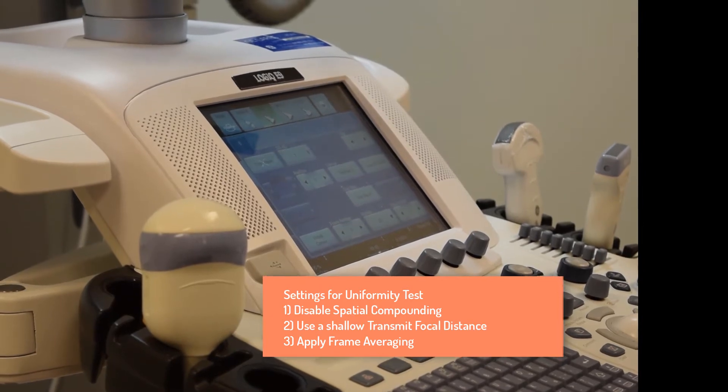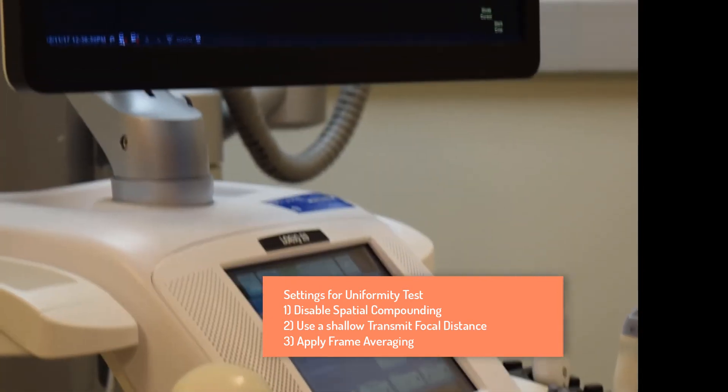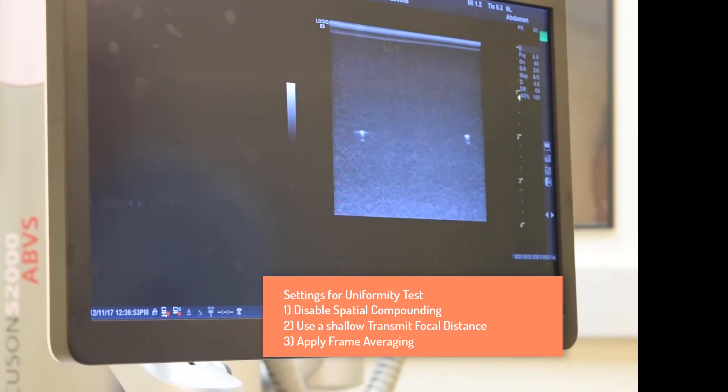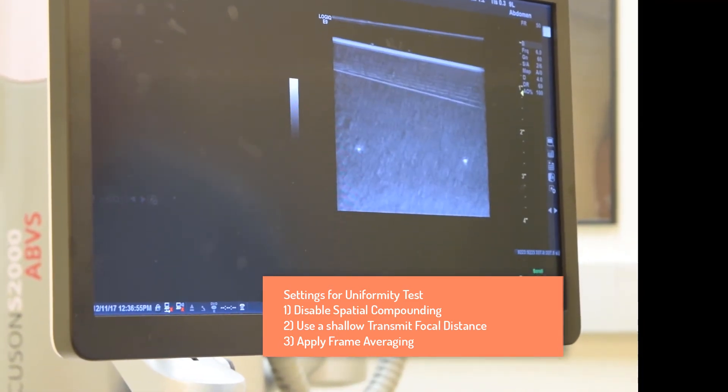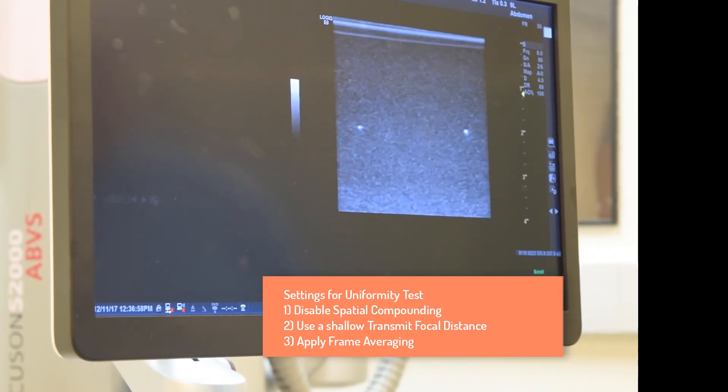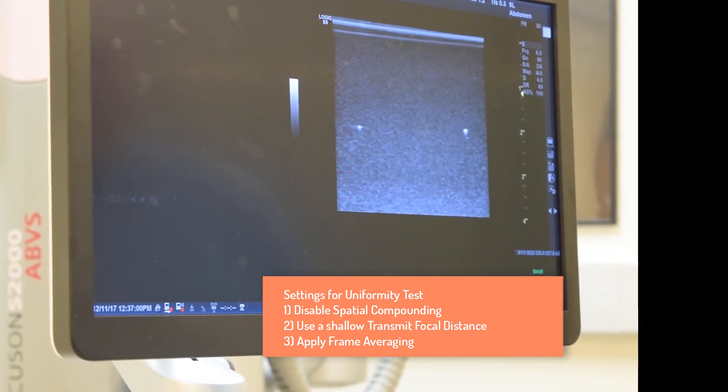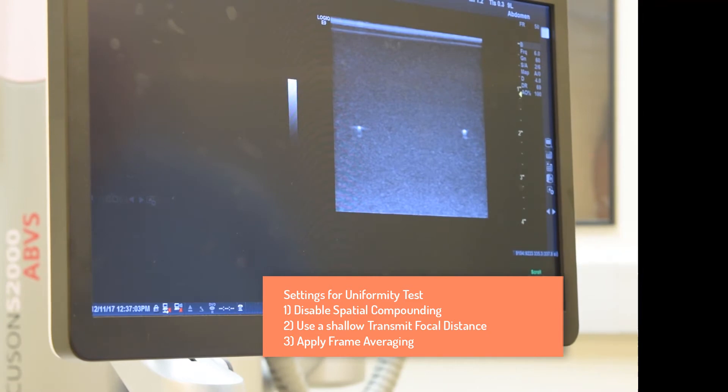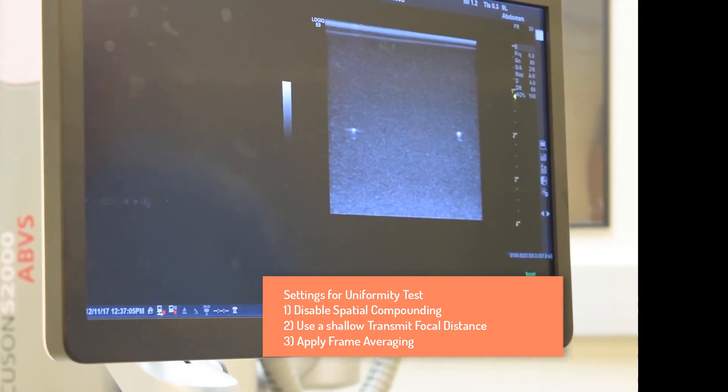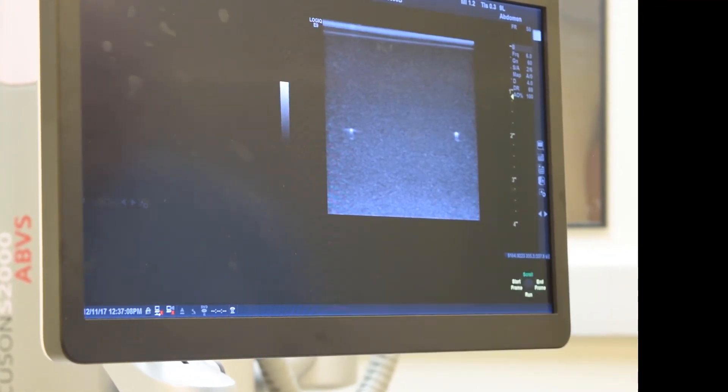So the suggested instrument settings for uniformity tests are to disable spatial compounding, use a shallow transmit focal distance, and apply lots of frame averaging while you move the transducer in order to try to smooth out the speckle pattern somewhat. Then we freeze the image and take a close examination of the result. This transducer looks quite uniform. I don't see any shadows, but there is this little bright spot that seems to emanate from the transducer surface.